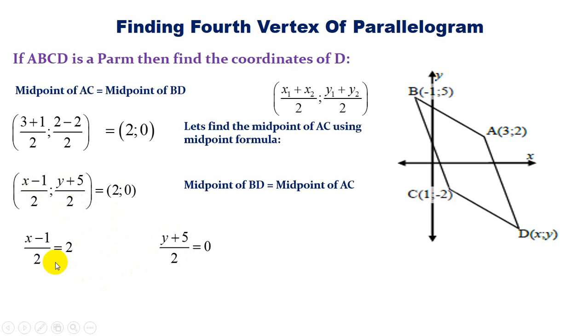Using our algebra, if we cross multiply we end up with X minus 1 equals 2 times 2 which is 4. Taking minus 1 to the other side gives us 5. For the Y equation, Y plus 5 equals 0, so Y equals minus 5. That gives us the fourth vertex D which is 5, minus 5.